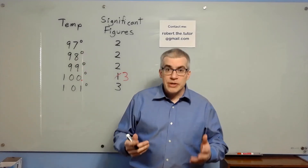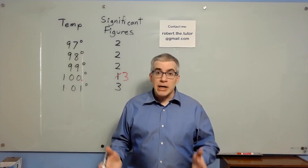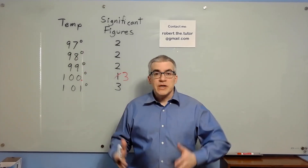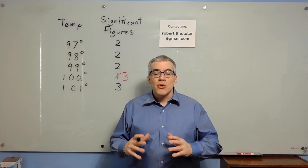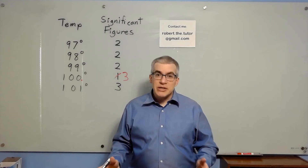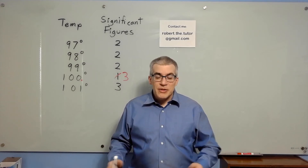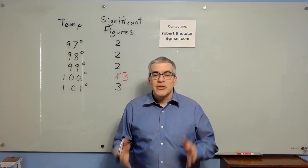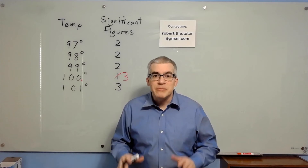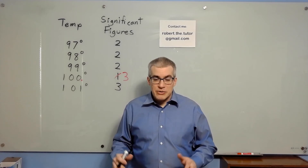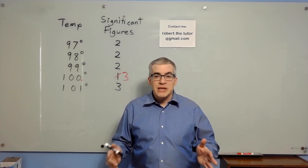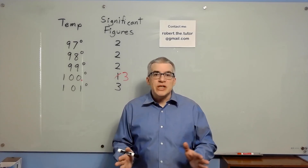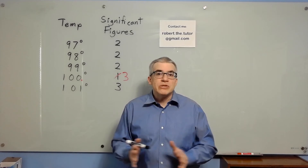Well, it turned out my instincts were right. Significant figures are only an approximation. They're a rule of thumb. They're a simplification. They're not meant to be perfect — they're just meant to give you the right number of digits most of the time.